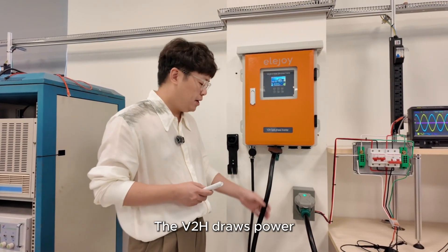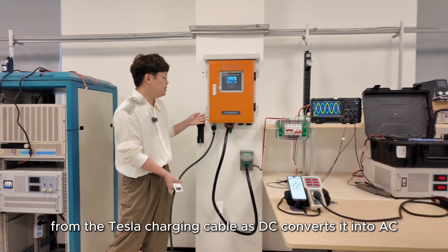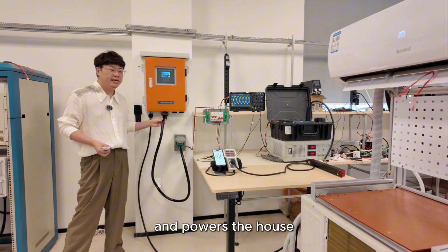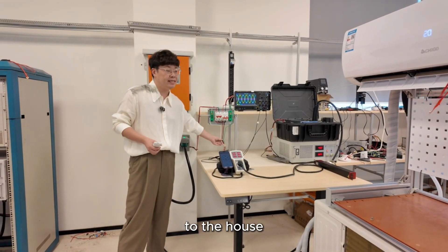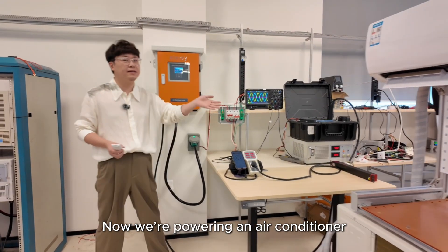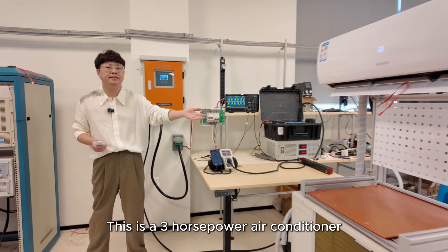The V2H draws power from the Tesla charging cable as DC, converts it into AC and powers the house through the backup power socket, then via this breaker to the house. Now we're powering an air conditioner. This is a three horsepower air conditioner.